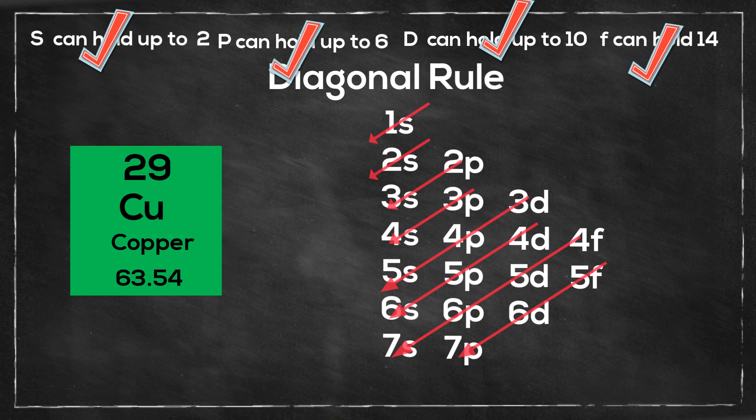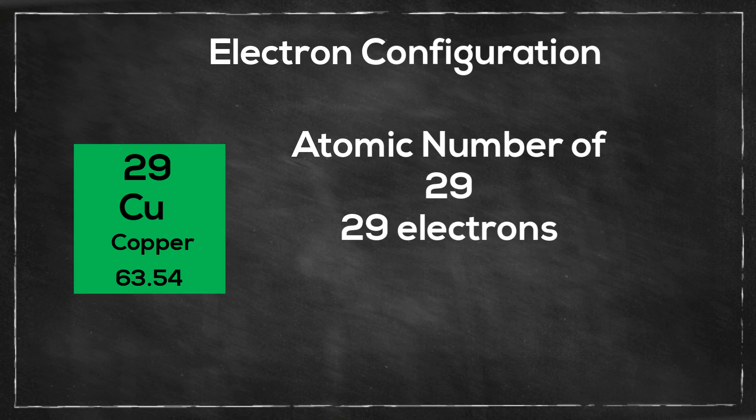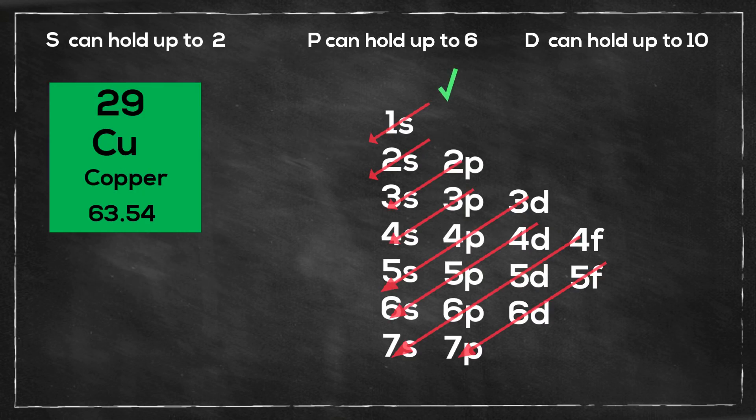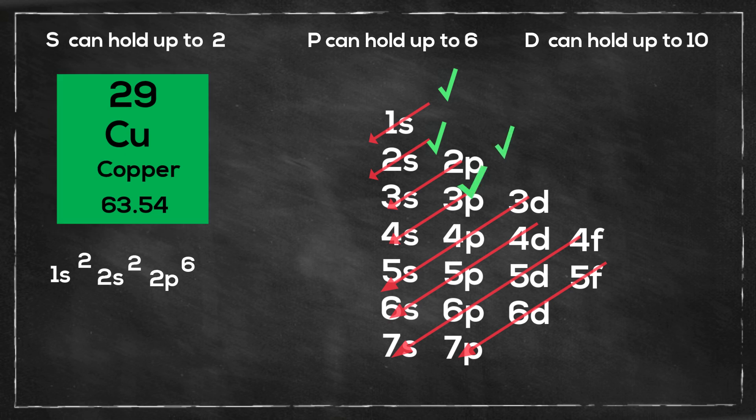So let's get started with copper. Copper has an atomic number of 29, so it has 29 electrons. I will start at the 1s, so I will go 1s2, then 2s2, then 2p6, then 3s2, then 3p6.